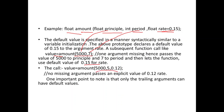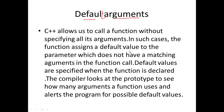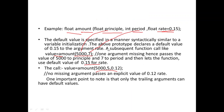In another case, if we call amount(5000, 5, 0.12), then 5000 goes to principle, 5 to period, and 0.12 is provided for rate — so the default 0.15 is discarded and 0.12 is used. An important point: only the trailing arguments can have default values. If our own values are passed, they take priority over the default values.